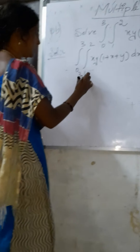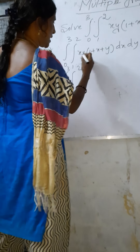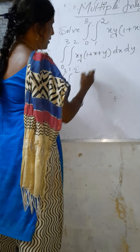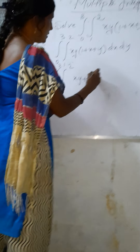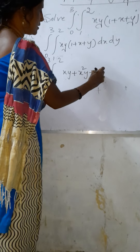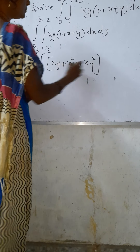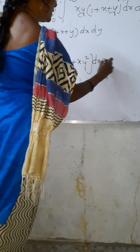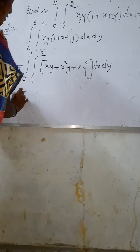Next, the integral of 0 to 3, integral of 1 to 2 — multiplying out x·y with the bracket gives x·y + x²·y + x·y² — into dx dy.